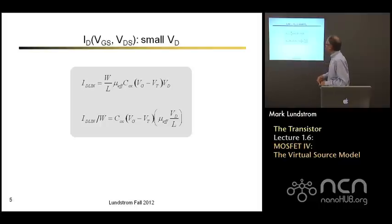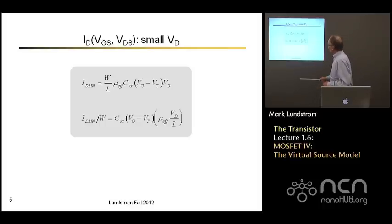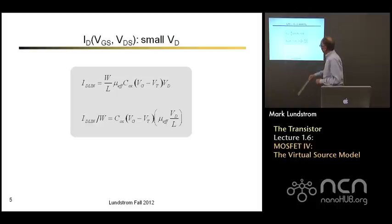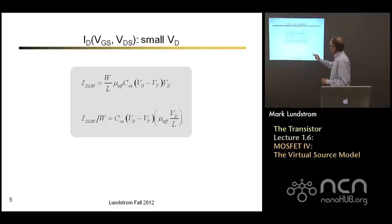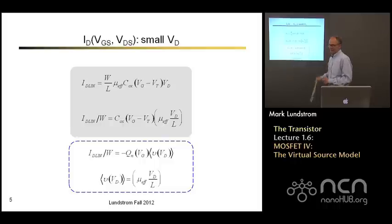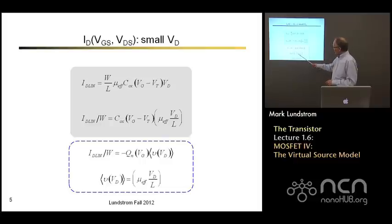Let's go back to the small drain voltage case. This was our expression for the linear current — the current for small drain voltage. If I rewrite that a little bit, it's current per unit width — that's why we always express these currents as microamps per micrometer. I can pull the Cox(VG minus VT) out front because that's the charge, and then the mobility and drain voltage divided by L, that's the electric field. So we've written it as: current per unit width equals charge times velocity, where the velocity under low drain-to-source voltage is just mobility times the constant electric field in the channel.